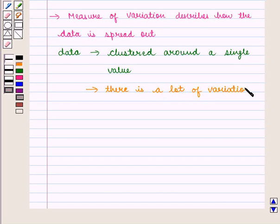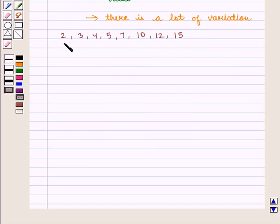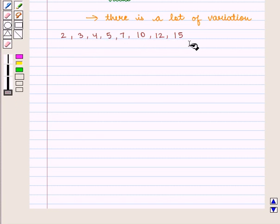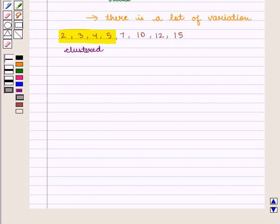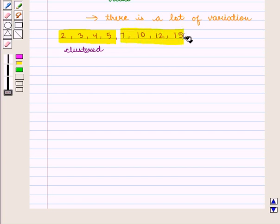For example, in the series 2, 3, 4, 5, 7, 10, 12, 15, here the values are clustered in the beginning where they are only one unit apart. They start to spread after 5 where they are 2 or 3 units apart.